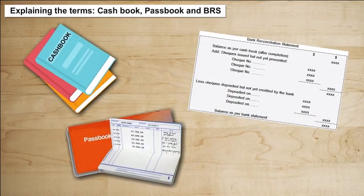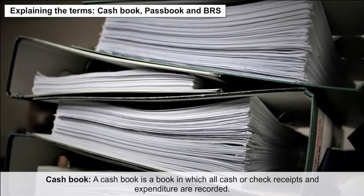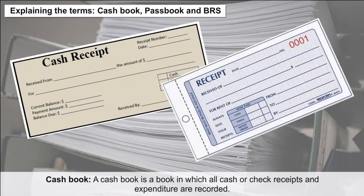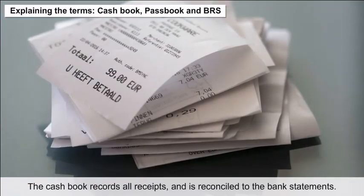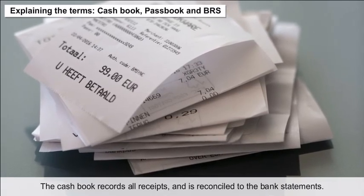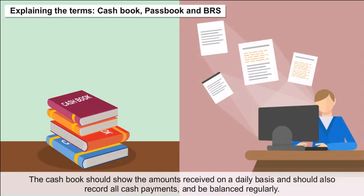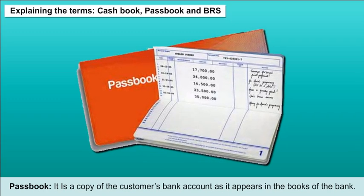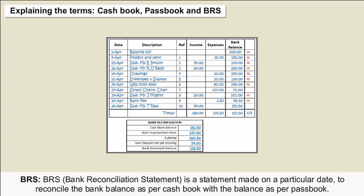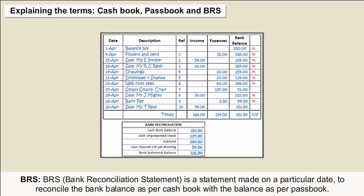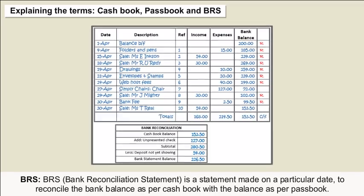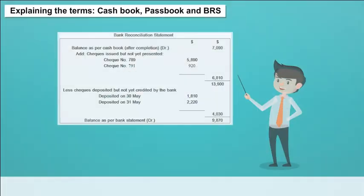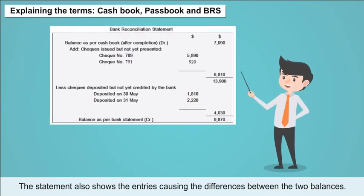Key terms explained — Cash Book: A cash book is a book in which all cash or check receipts and expenditures are recorded. It records all receipts, is reconciled to the bank statements, shows amounts received on a daily basis, and records all cash payments, balanced regularly. Pass Book: It is a copy of the customer's bank account as it appears in the books of the bank. BRS: A Bank Reconciliation Statement is a statement made on a particular date to reconcile the bank balance as per cash book with the balance as per pass book, also showing entries causing the differences between the two balances.